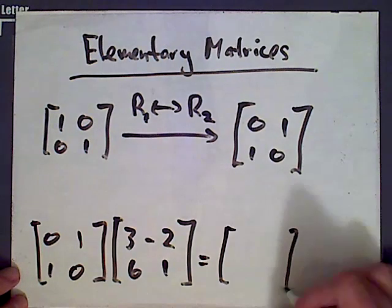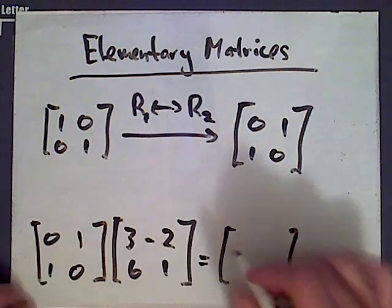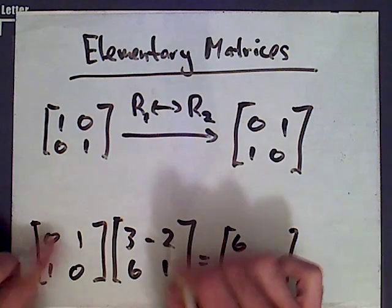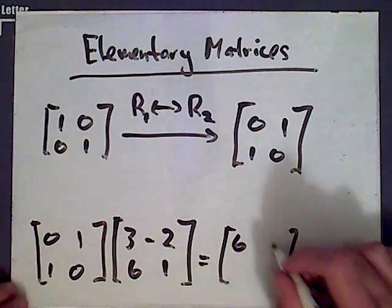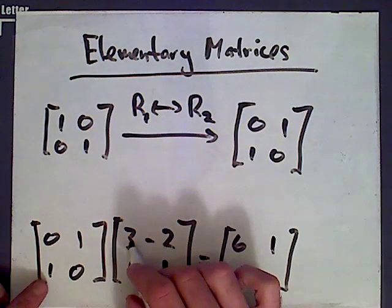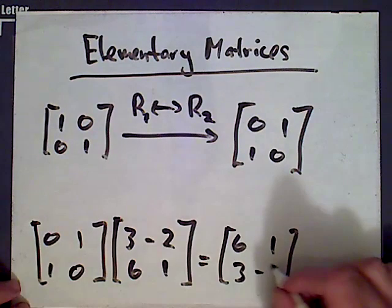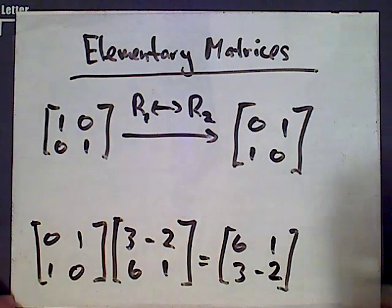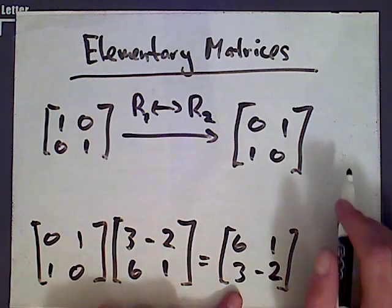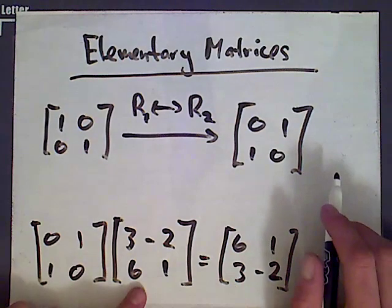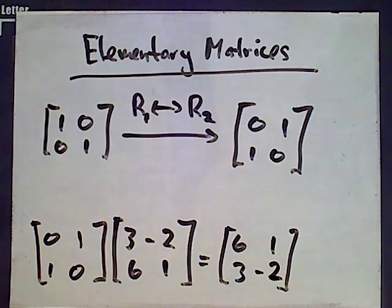What do we get? 0 plus 6 is 6, 0 plus 1 is 1, 3 plus 0 is 3, negative 2 plus 0 is negative 2. And what you can see is that this matrix on the right was obtained from this matrix here by switching row 1 and row 2.